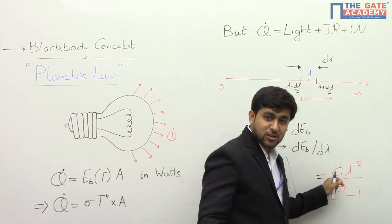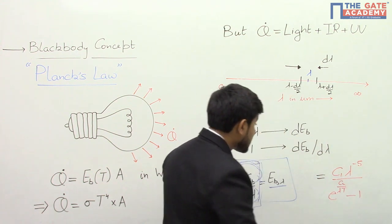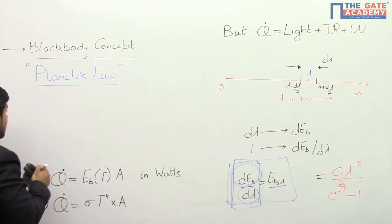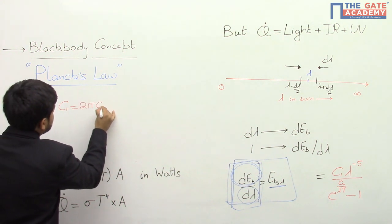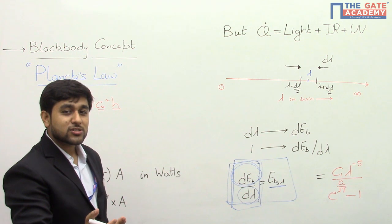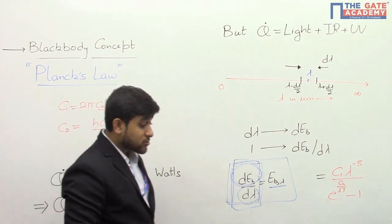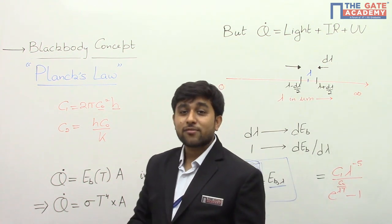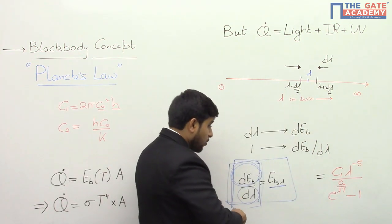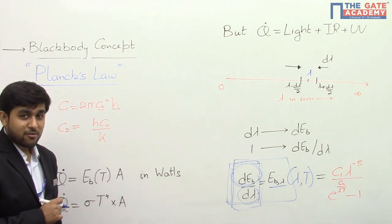Planck found out the mathematical expression for this monochromatic emissive power. He said that Eb,λ is equal to C1 times lambda raised to power minus 5, divided by (e raised to power C2 divided by lambda-T, minus 1). Both C1 and C2 are constants. C1 equals 2π·c₀²·h, where c₀ is the speed of electromagnetic waves in vacuum and h is Planck's constant (6.626 × 10⁻³² ). C2 equals h·c₀/k, where k is the Boltzmann constant equal to the universal gas constant divided by Avogadro's number. So the monochromatic emissive power is a function of both the temperature of the black body and the wavelength.